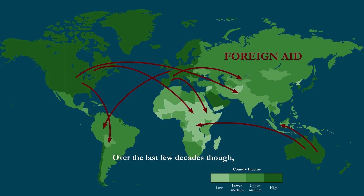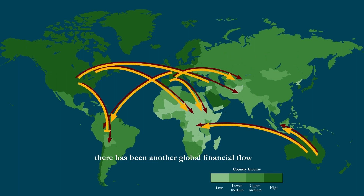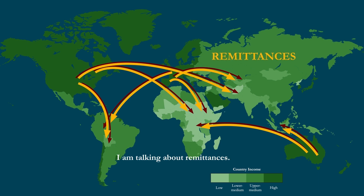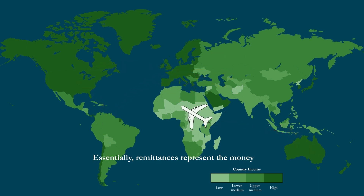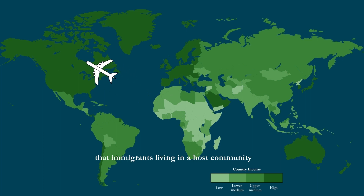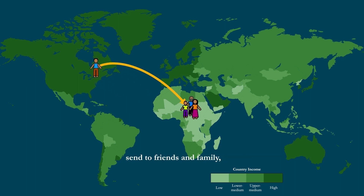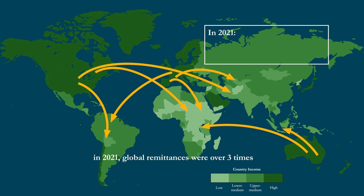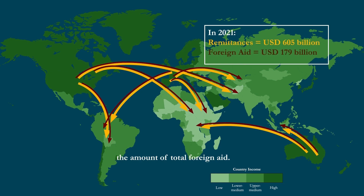Over the last few decades, though, there has been another global financial flow that has generated a lot of interest among people involved in international development. I'm talking about remittances. Essentially, remittances represent the money that immigrants living in a host community send to friends and family, normally back in their home communities. And we are talking about a lot of money here — in 2021, global remittances were over three times the amount of total foreign aid.